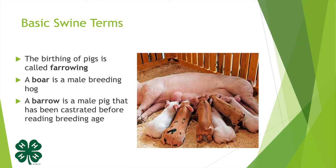The birthing of pigs is called farrowing, and we call all of the pigs born to the same mother at the same time a litter of piglets. A boar is a male breeding hog, and a barrow is a male pig that has been castrated before reaching breeding age, so it's not able to breed and have piglets.